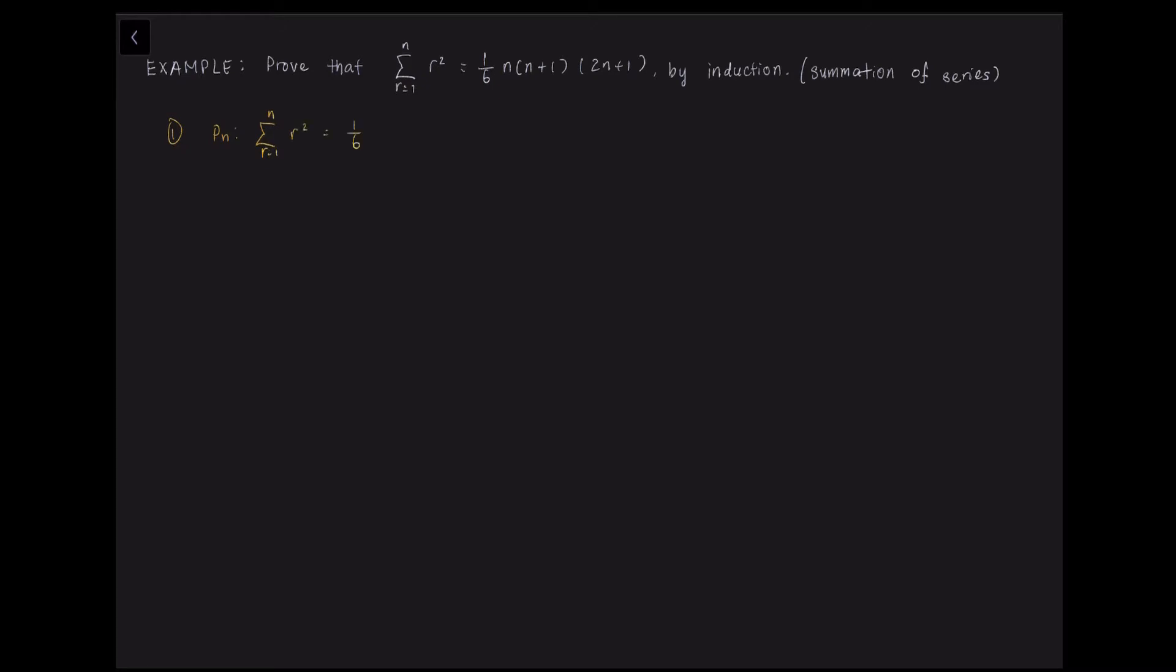So what is the proposition here? So we say that P(N), which is the sum of R squared equals to 1/6 N times (N+1) times (2N+1), which is you just have to straight away copy from the question. And then you write for some positive integer N. And that is the first step.